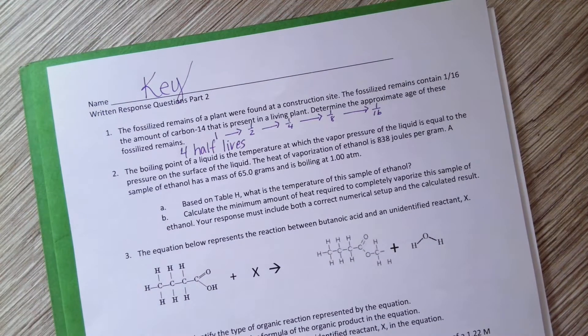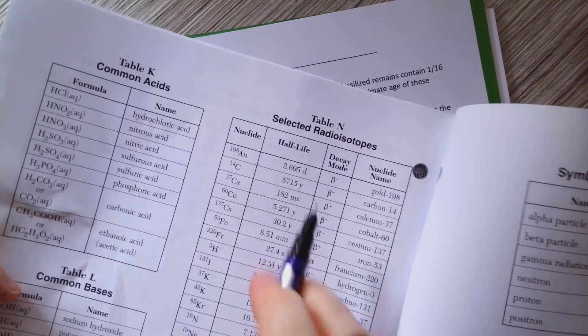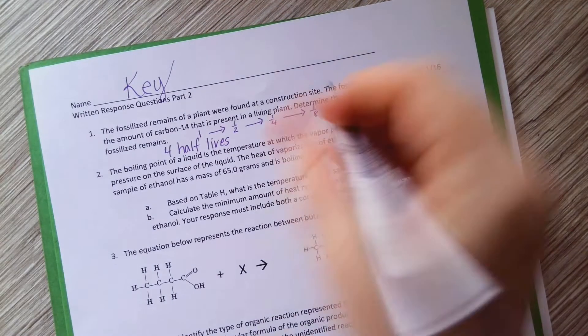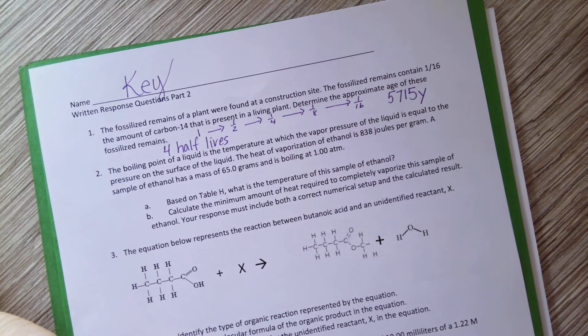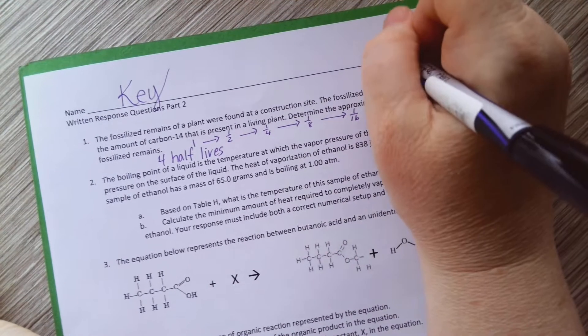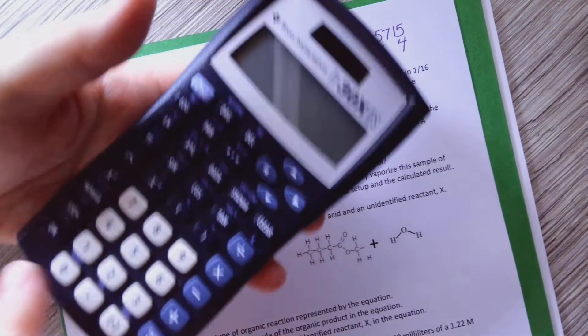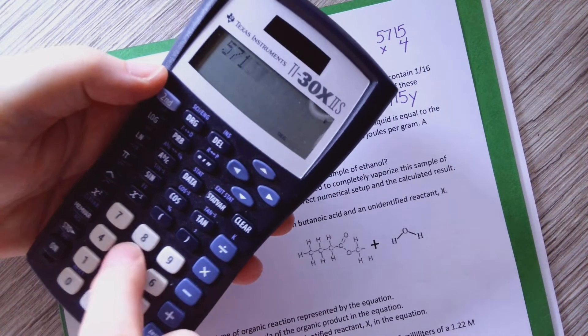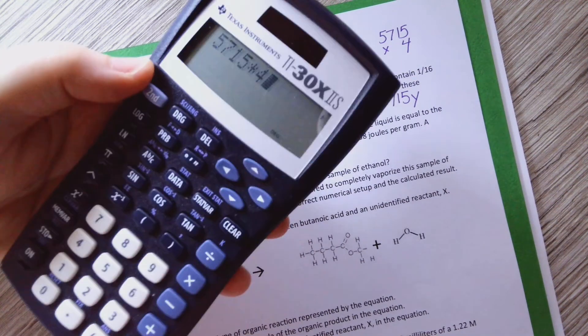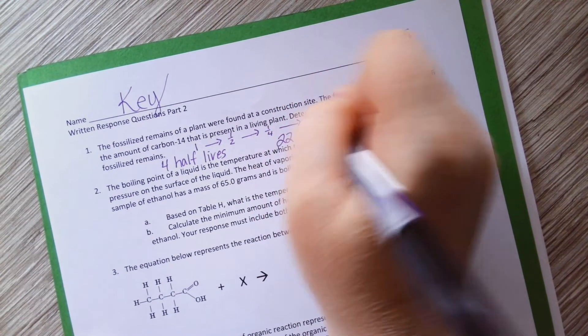How long is a half-life? Let's go to the reference table. Let's find carbon-14. It has a half-life of 5,715 years. So 5,715 years is one half-life, but it wasn't one half-life, it was four. So I'm going to take 5,715 times 4. So I can do that in a calculator. 5,715 times 4 equals 22,860 years. There we go.